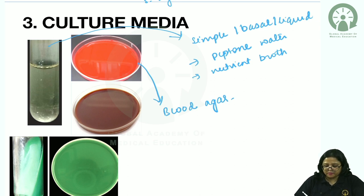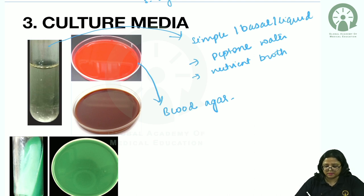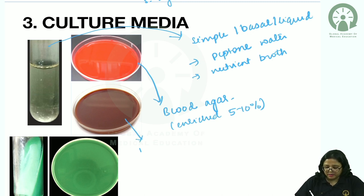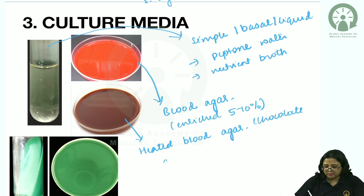Blood agar is opaque red in color. It is an enriched media enriched by human or sheep blood at a concentration of 5–10%. It is also an indicator media because we can differentiate bacteria on the basis of hemolysis. Heated blood agar, also known as chocolate agar, is used for fastidious bacteria such as Haemophilus influenzae, which requires growth factors present in chocolate agar.